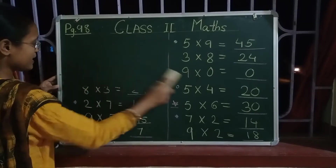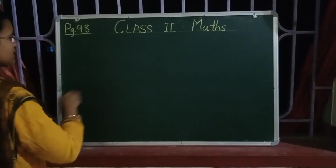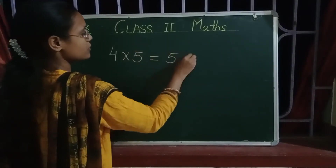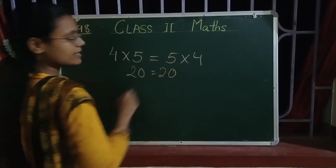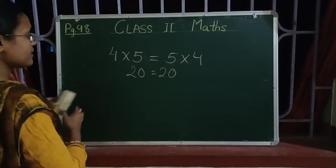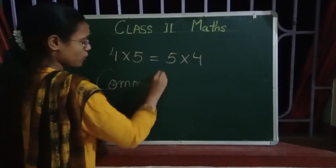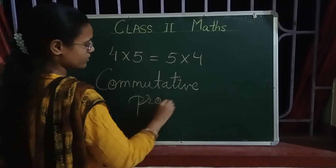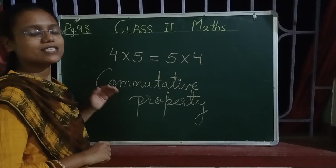This shows that 4 into 5 is equal to 5 into 4, because 4 fives are 20 and 5 fours are also 20. Here just the order is changed. This is called commutative property.